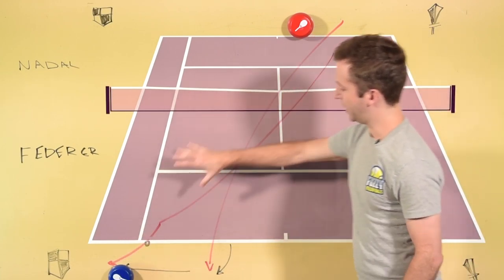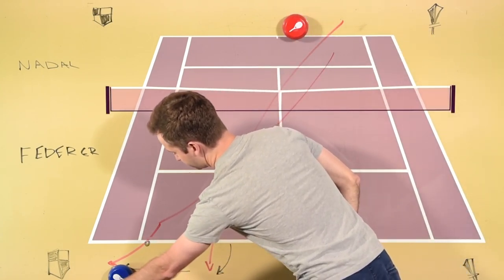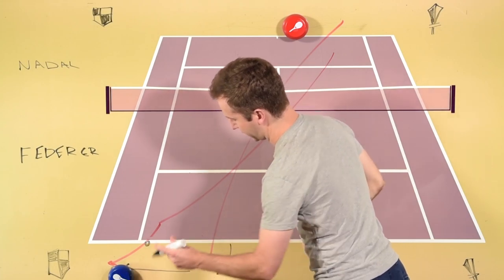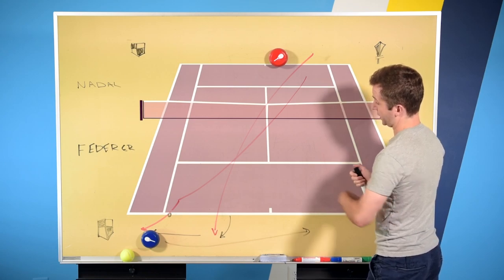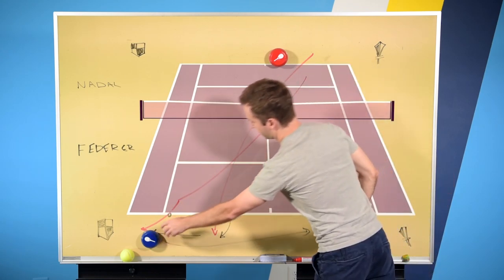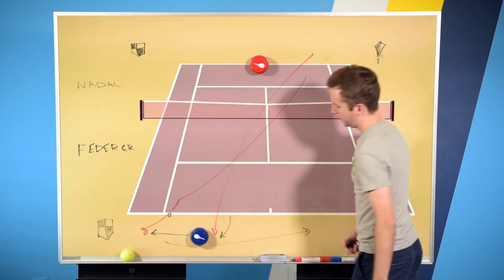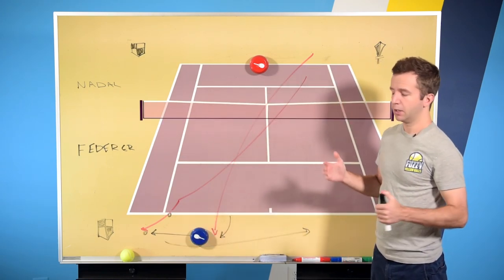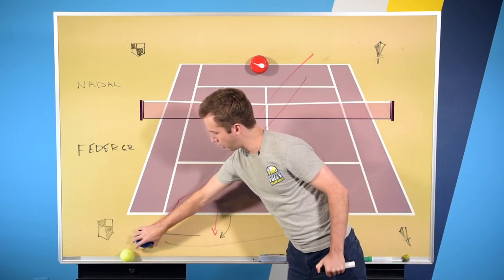And then the next shot Fed hits is a super easy put away for Rafa because Fed's got to cover the open court. So he's going to be moving this way and Rafa can either go to the open court or equally as effective, he can run around, hit a forehand and hit behind. But in either case, he's going to win pretty much all of those points once he gets Fed all the way over here.